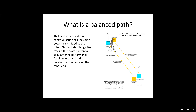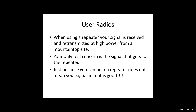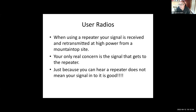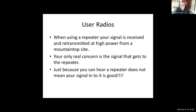When using a repeater — and we aren't doing this for the Golden Packet, but for knowledge base so the stuff I'm talking about later makes more sense — your signal is received and retransmitted at high power from typically a mountaintop or tower site. All your signal has to do is get there, and then the repeater does all the work. But just because you can hear a repeater well does not mean your signal into the repeater is good. This is typically where we get an imbalanced path.